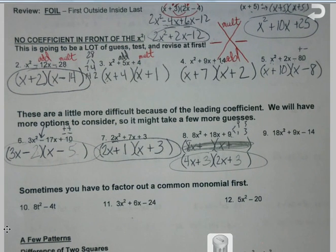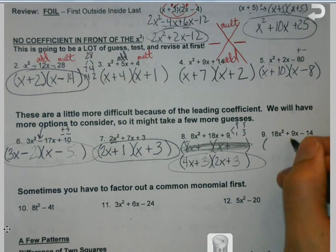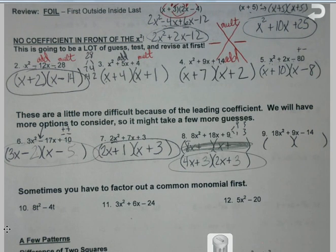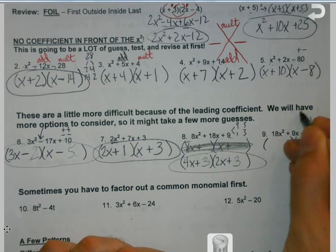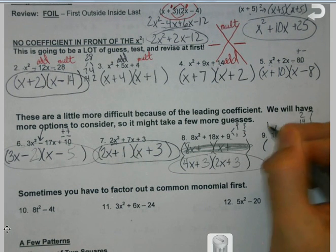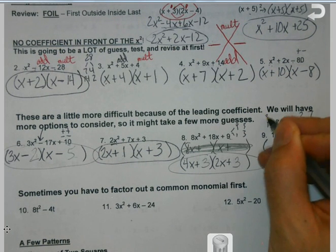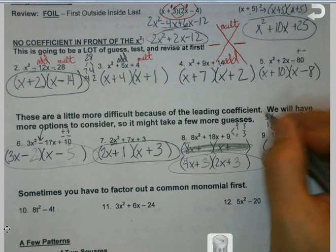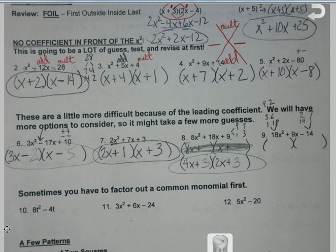Now, this last guy's a doozy. Because there's options galore here. For 18, I could have 18 and 1. I could have 2 and 9. I could have 3 and 6. My goodness, 14. I could have 14 and 1. I could have 7 and 2. How do you keep all this stuff straight?